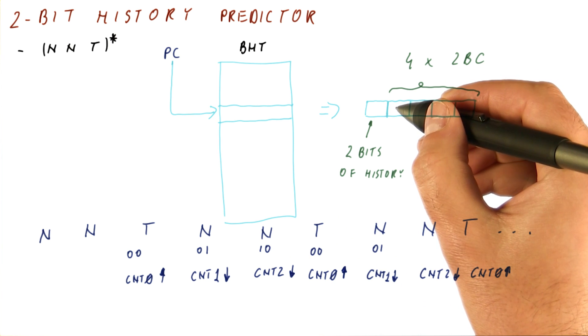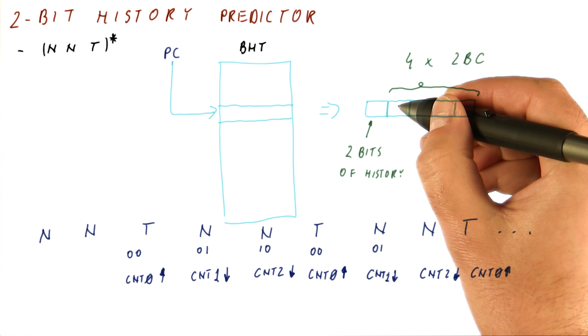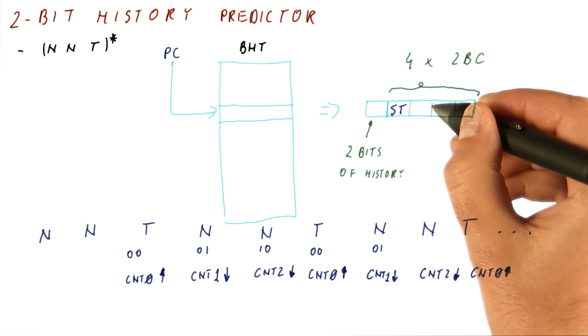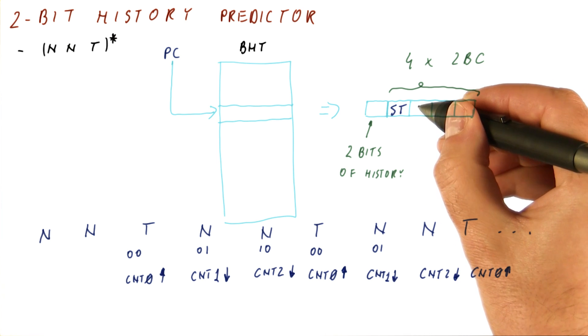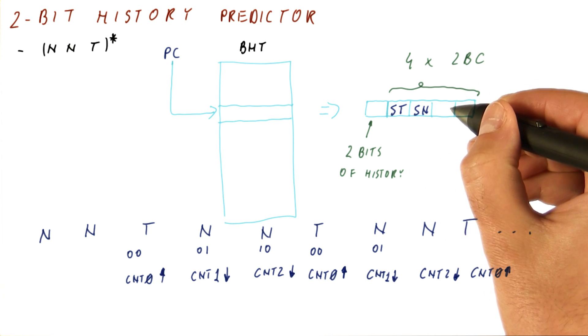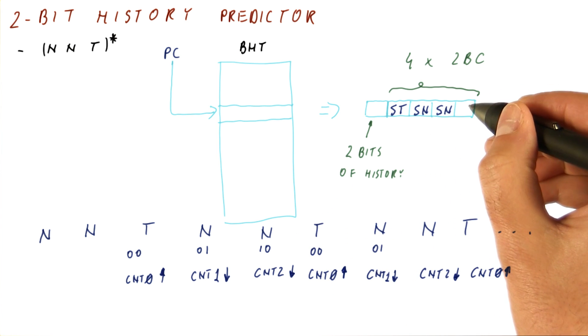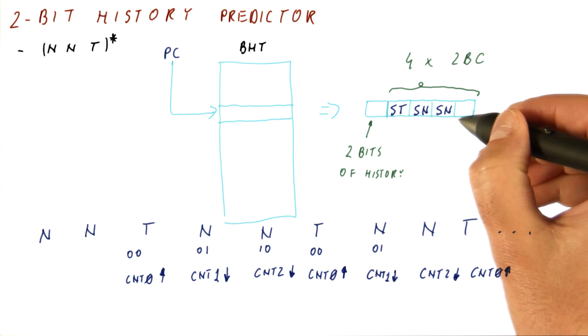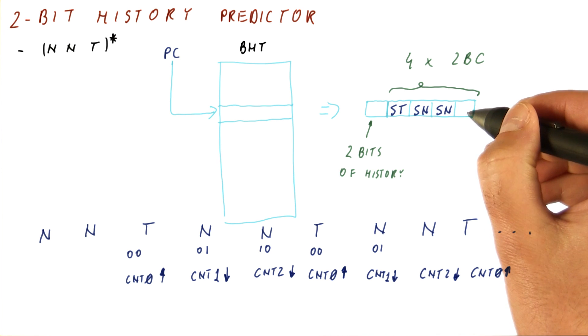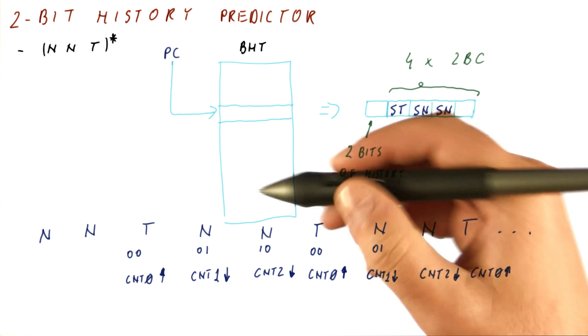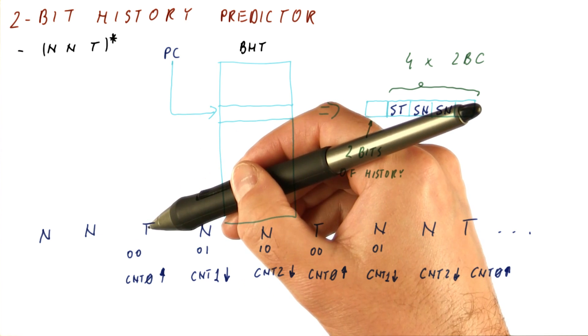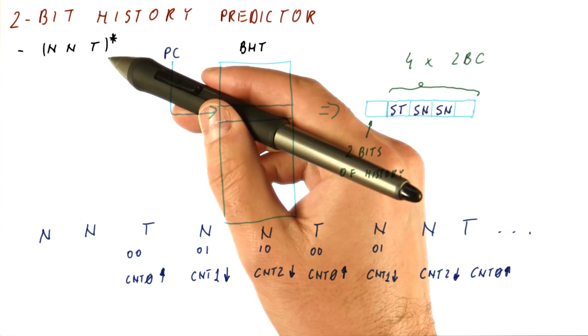As you can see, what's now going to happen is pretty much this counter 0 here will start to predict strong taken. Counter 1 will start to predict strong not taken. And counter 2 is going to predict strong not taken. Counter number 3, which is the last counter we have, actually never gets used because we never see a history of 1, 1. That would mean that we have seen a taken followed by a taken, which doesn't happen in this particular pattern.